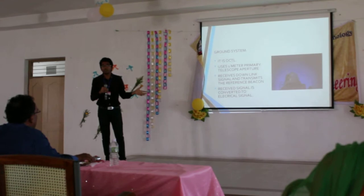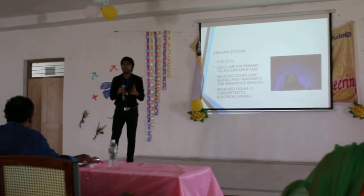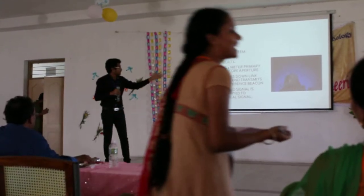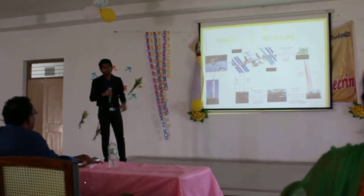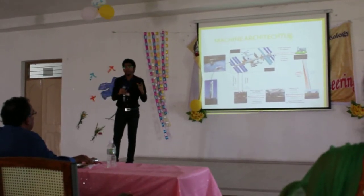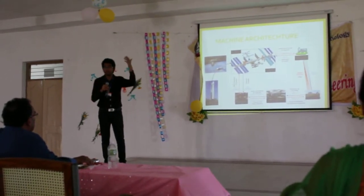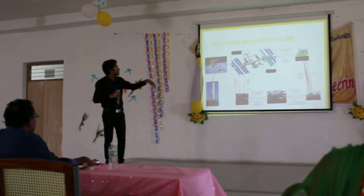The ground system is an optical communication ground terminal, which is located in California. It uses a primary telescope. It receives the signal from space and converts the optical signal into an electrical signal.